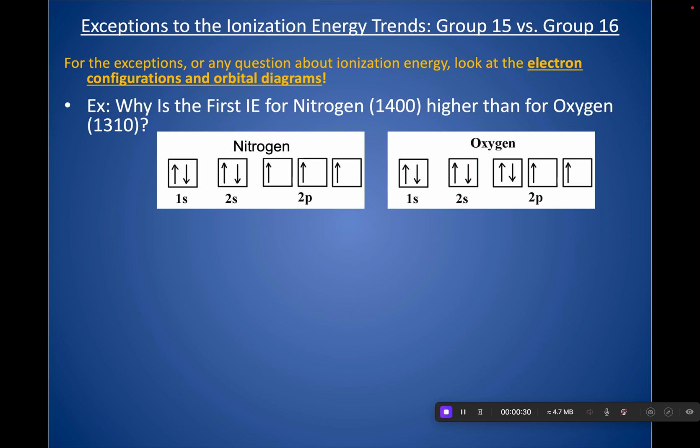We would expect oxygen to be harder to remove an electron from, but it's actually easier. So let's take a look at where we are removing the electrons. Notice both of them have the second shell as their valence shell, and we would be removing from the 2p.